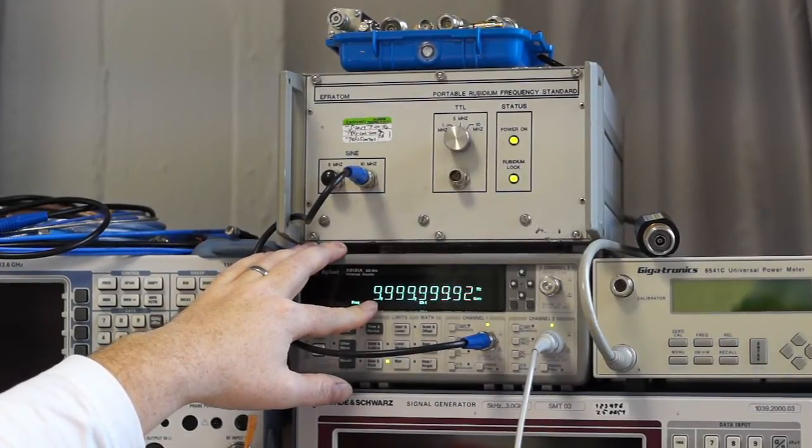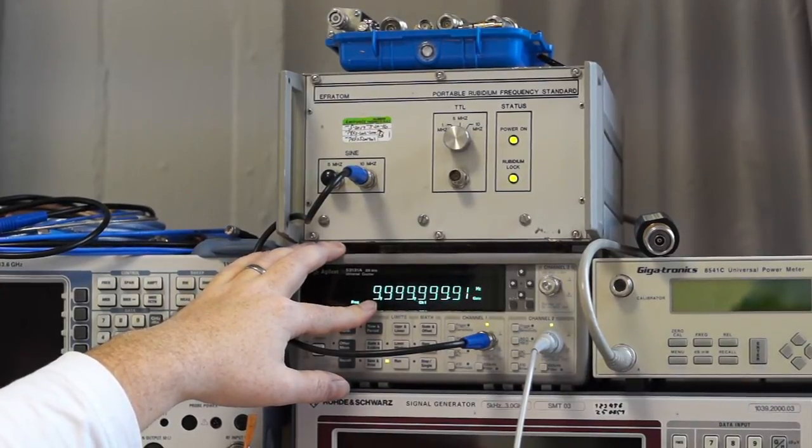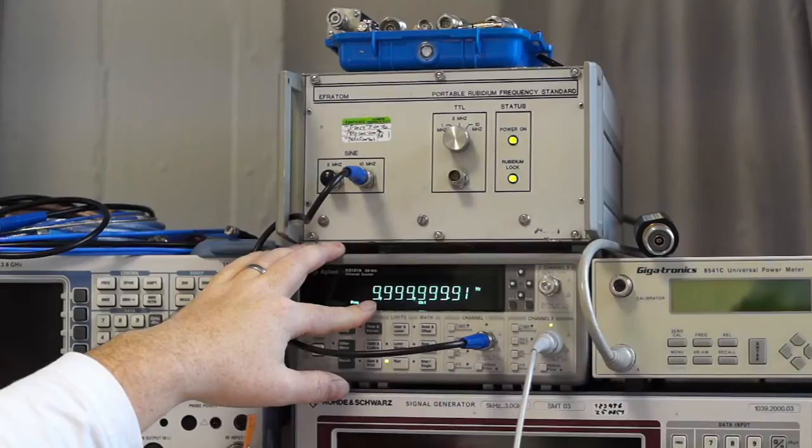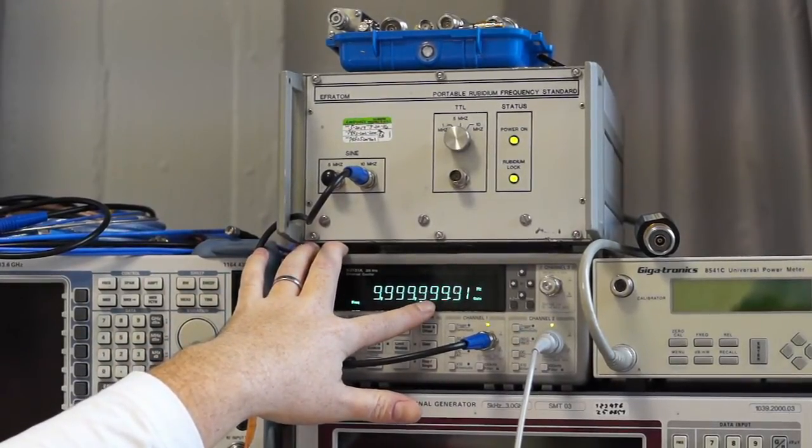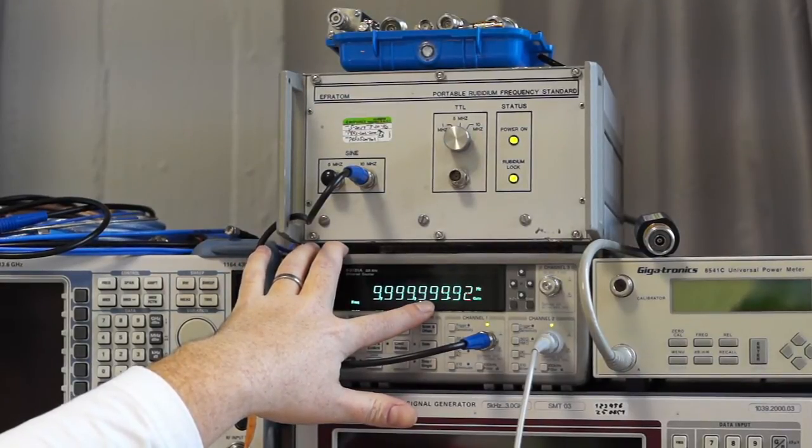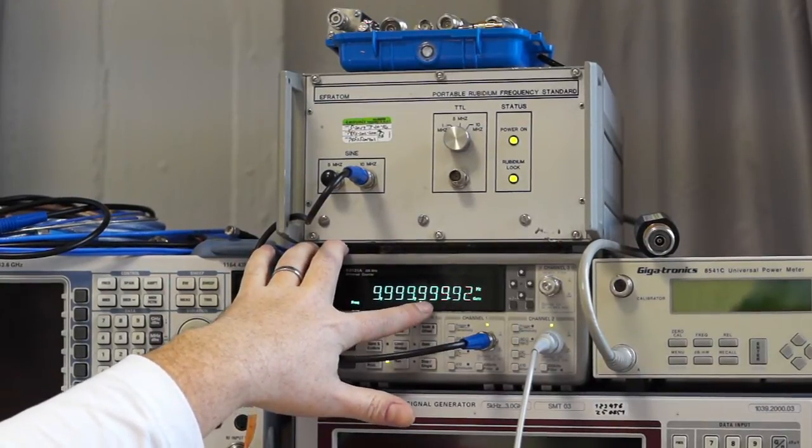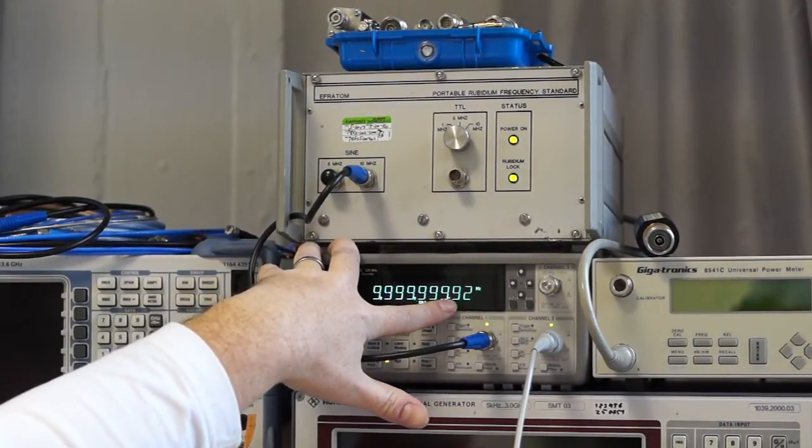If you do the math, you will find out that for a 10 MHz signal, one ppm, one part per million, is 10 Hz. So this figure here has to be within spec. Actually, with this setup we see that those two clocks agree within 0.1 ppm and 0.01 ppm.